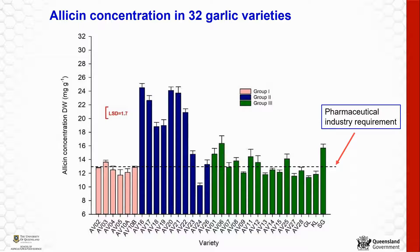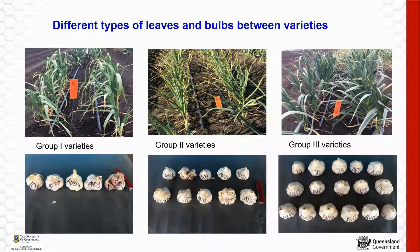The pharmaceutical industry dietary requirement for allicin concentration is more than 4.5 milligrams per gram in fresh weight, equivalent to about 13 milligrams per gram in dry weight if the dry matter percentage is about 55 percent. Across 32 garlic varieties, only about 17 varieties meet that demand. Based on differences in allicin concentration and morphological features such as leaf and bulb shapes, I divided garlic into three groups.